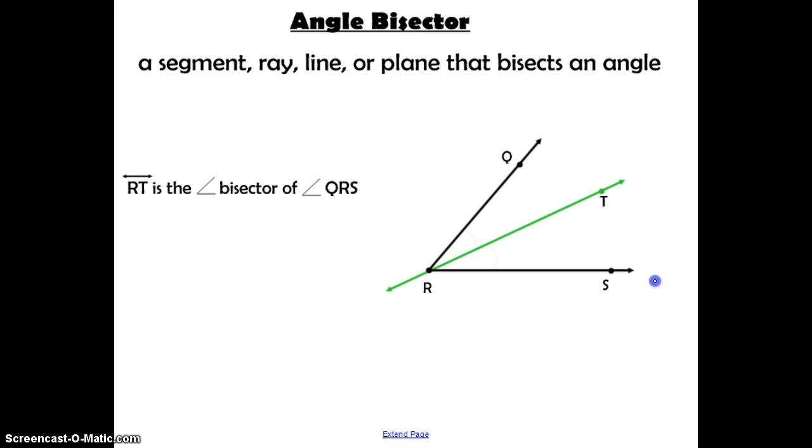An angle bisector is a segment, ray, line, or plane that bisects an angle. So we have this angle QRS, and it gets bisected by this line RT. So it's going to cut this angle in half, so that angle QRT and angle TRS are congruent to each other.